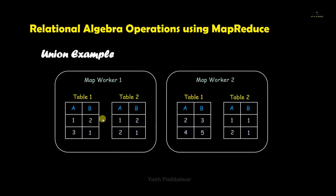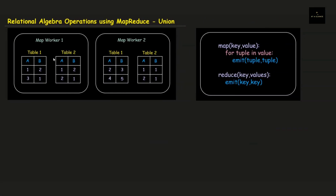Now we will see a simple example where we have taken two map workers. Each map worker contains two tables: table 1 and table 2. Note that all the map workers will contain every single table on which you need to perform the union operation, and each map worker will contain only a part of the entire table from the big data. For example, record 1,2 appears in both tables of the first map worker, so when we take the union the result will only have a single tuple 1,2 — it won't be repeated twice.